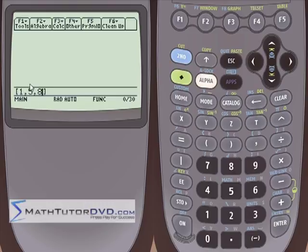So 1 is in the X direction, 5 is in the Y direction, 8 is in the Z direction. It's just a point that represents the tip of that arrow. All right. So that's how we represent vectors.